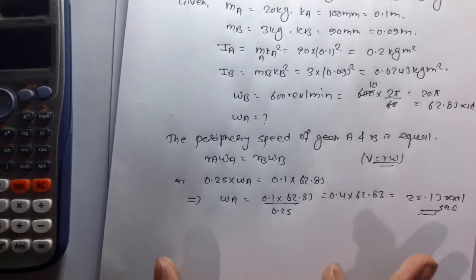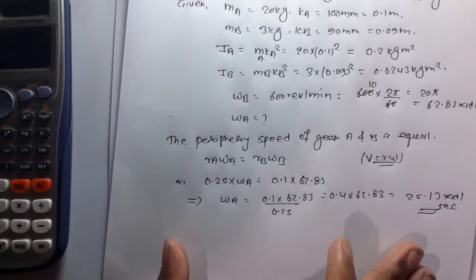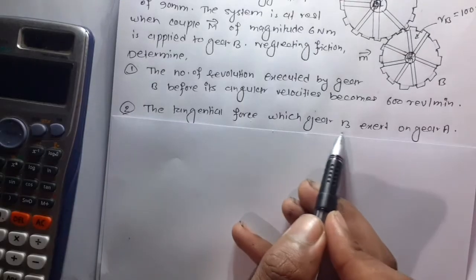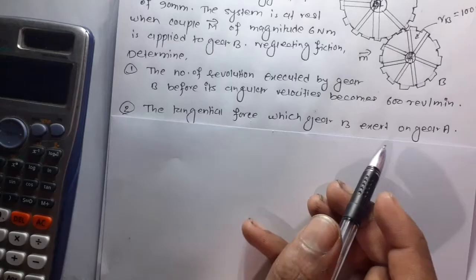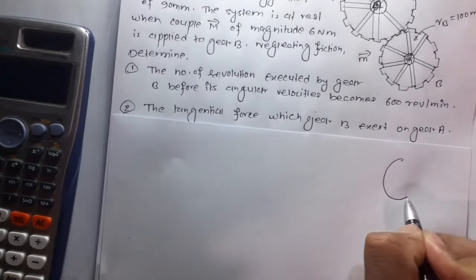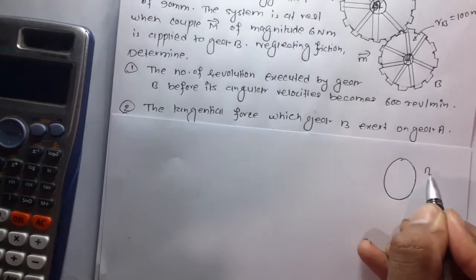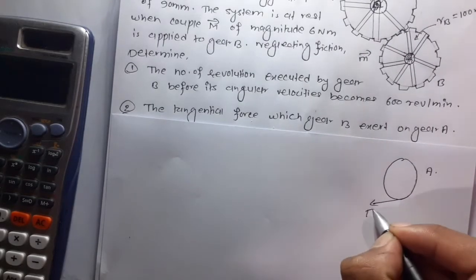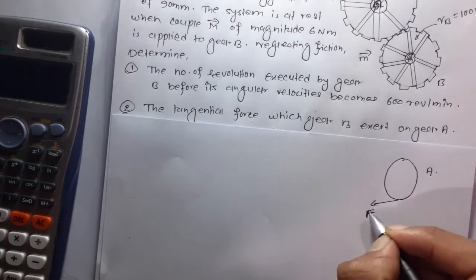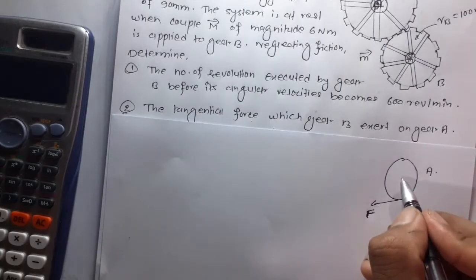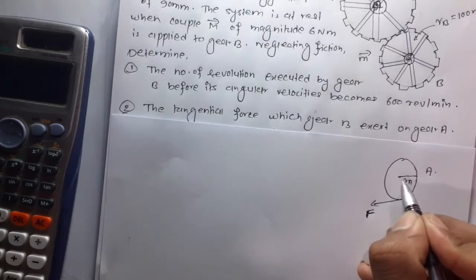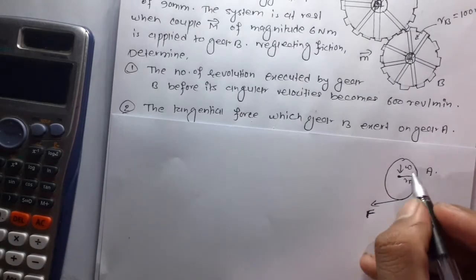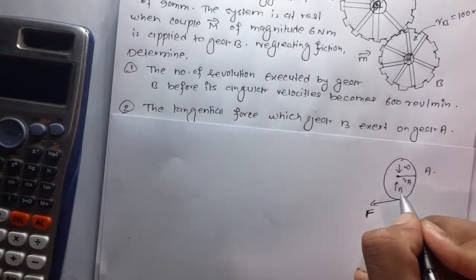For part B, finding the tangential force which gear B exerts on gear A. We consider a free body diagram of gear A showing the tangential force F acting at radius RA, with the weight acting downward and the reaction at A.